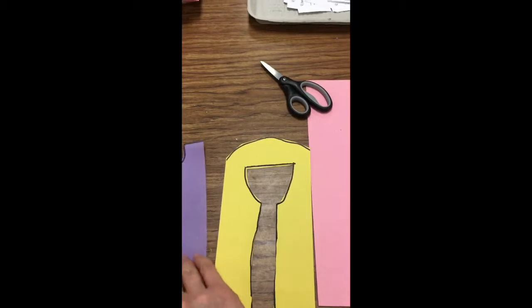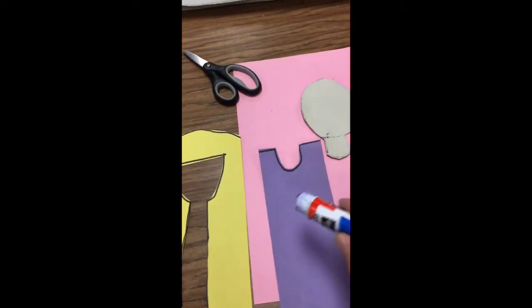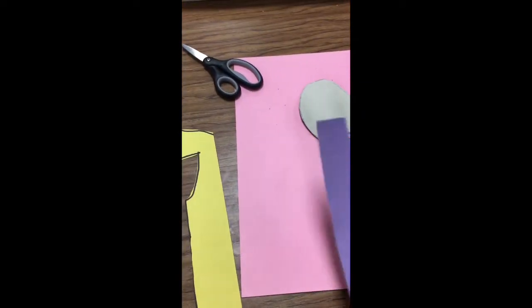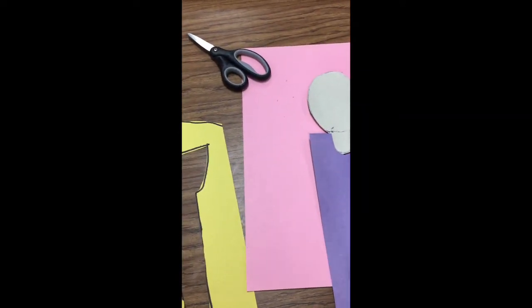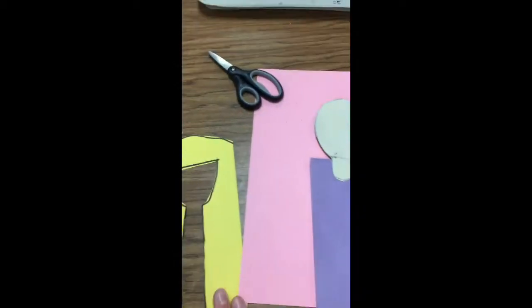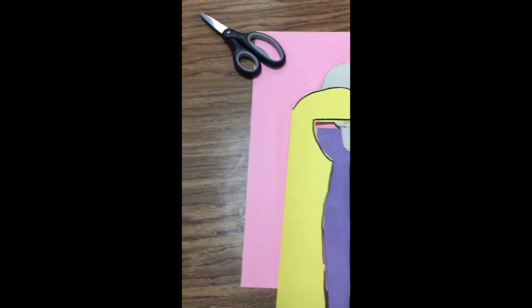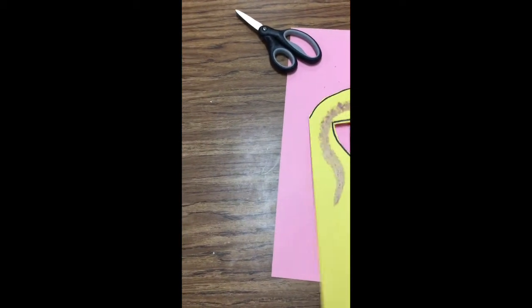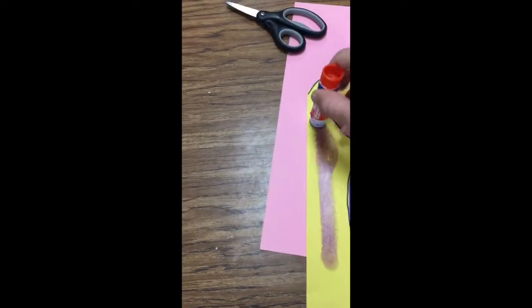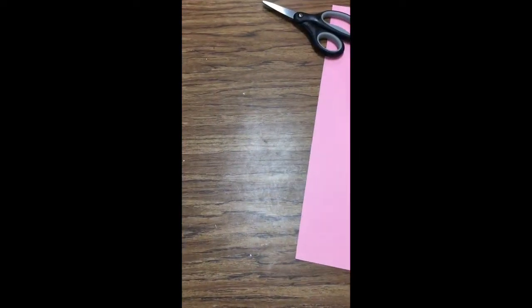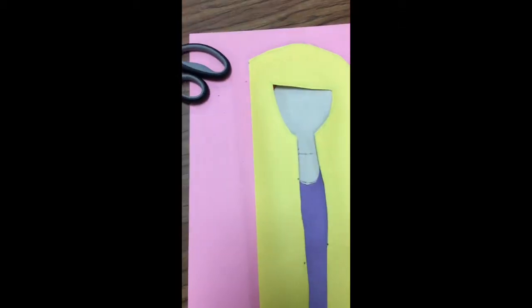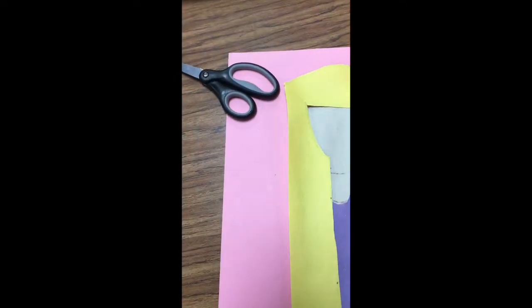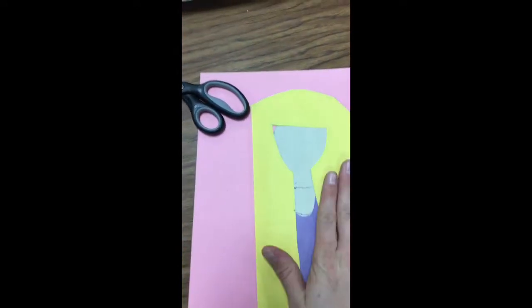Then I'm going to glue on her dress. Glue on the side with the black lines. Flip it over and glue it down. There's her beautiful dress. Last but not least, I'm going to glue down her hair. Here I go. Gluing on the side with the black lines. Flip it over, and I'm going to place it right over her head. So you shouldn't see any of the tan peeping through. There's my Rapunzel.